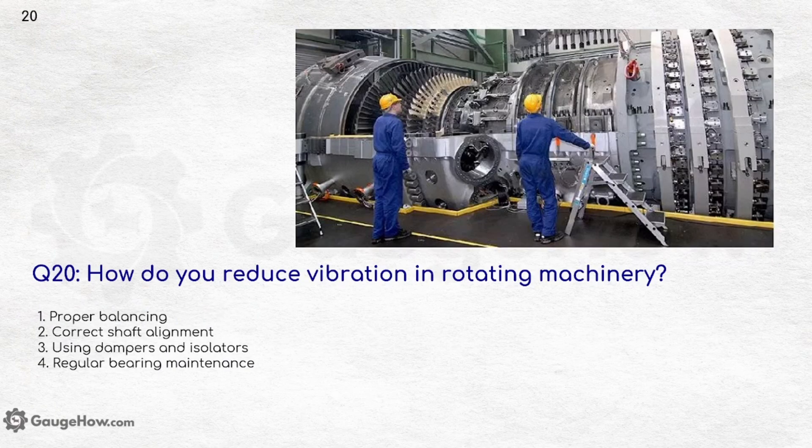How do you reduce vibration in rotating machinery? By using proper balancing, correct shaft alignment, using dampers and isolators, and regular bearing maintenance.